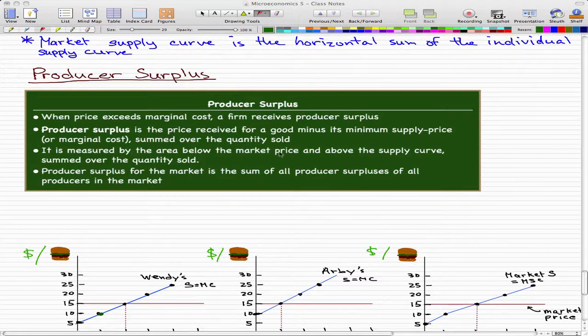It is measured by the area below the market price, which is this red line, and above the supply curve, which is the blue line, summed over the quantity sold. Producer surplus for the market is the sum of all producer surpluses of all the individual producers in the market.